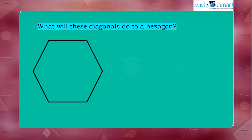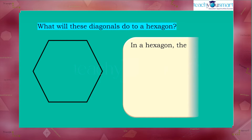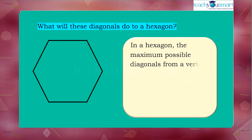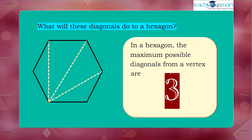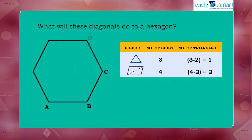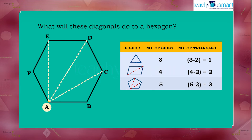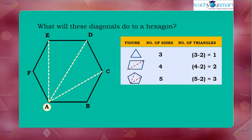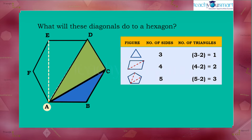Consider the case of a hexagon. In a hexagon, the maximum possible diagonals from a vertex are three. Here, in hexagon ABCDEF, the number of diagonals from vertex A are three. Therefore, the diagonals divide the hexagon into four triangles: triangle ABC, triangle ACD, triangle ADE, and triangle AEF.